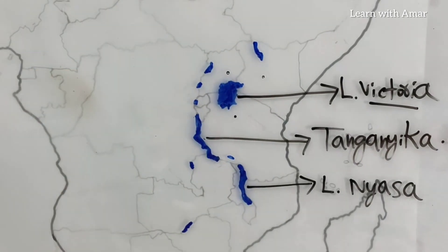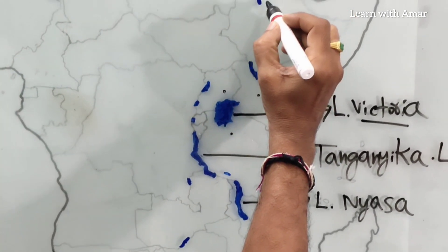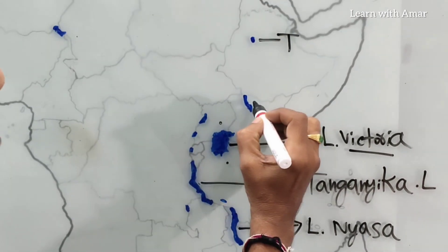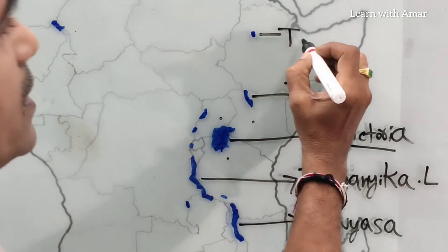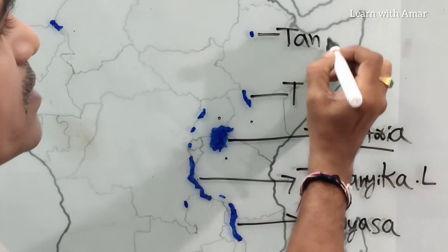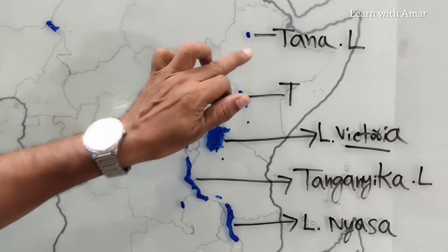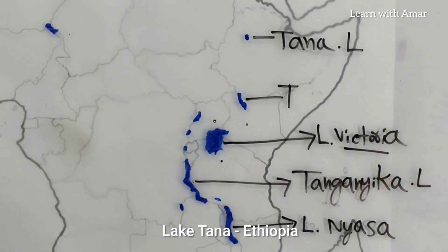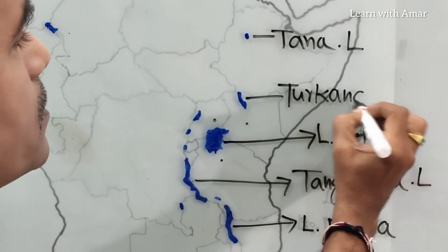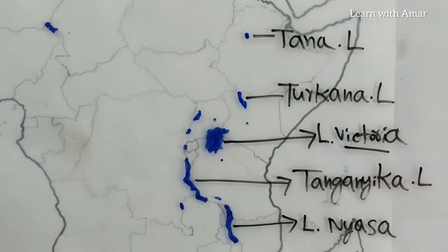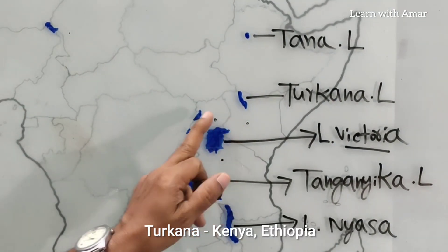Now, these two — both start with T. This one is Lake Tana, located in Ethiopia.